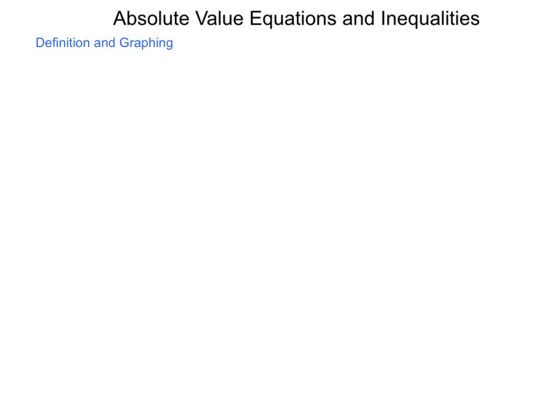Our last area of study in our review of Algebra 1 concepts is absolute value equations and inequalities. We're going to begin with a definition. As a reminder, absolute value means the distance from zero. That is all this is — we're figuring out how far something is away. Distance, in a mathematical sense, is always a positive number. You might be 5 feet ahead or 5 feet behind, but either way you are 5 feet away.